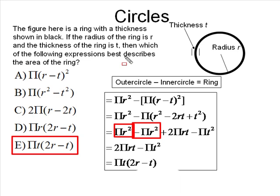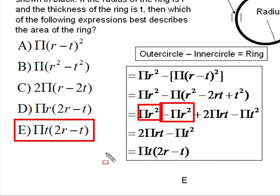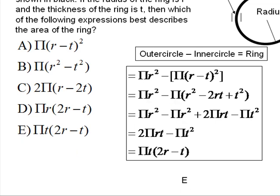And you have to look at the question. The question says, which of the following expressions best describes the area of the ring? So the area of the ring is always empty in the middle. So in order to find the area of the ring, you have to find the total outside area minus the inside area to get the ring. So here it is. The mathematical equation reduces down to πT times 2R minus T, and that is answer choice E.